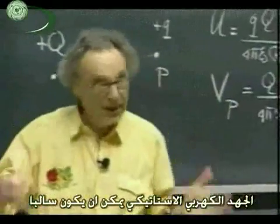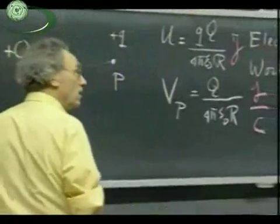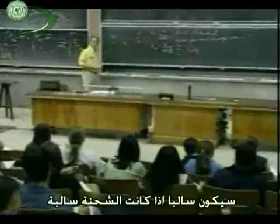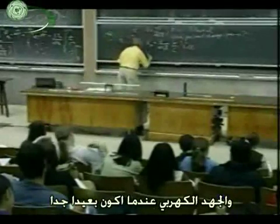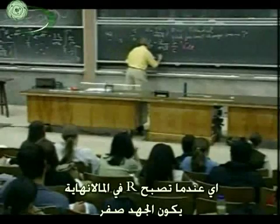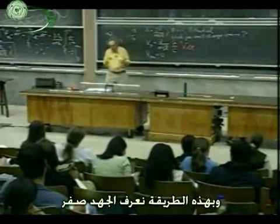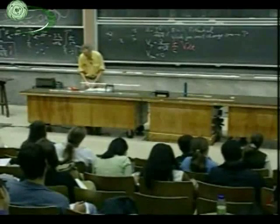Electrostatic potential can be negative. The work that I do per unit charge coming from infinity would be negative if that's a negative charge. And the potential when I'm infinitely far away — when R becomes infinitely large — is zero. So you can have positive potentials near positive charge, negative potentials near negative charge, and if you're very far away, the potential is zero.